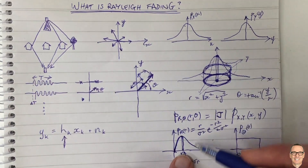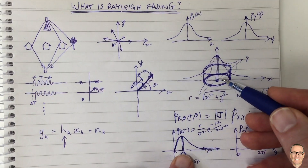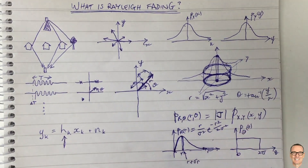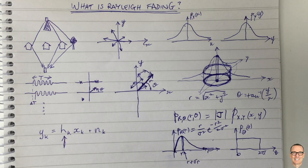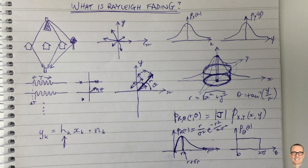So that's Rayleigh fading — it comes from multiple paths with independent Gaussian in-phase and quadrature components, leading to a uniform phase distribution and a Rayleigh-distributed amplitude. Please like the video if you found it useful, it helps others find it. Subscribe to the channel for more videos and check out the web page which has a full categorized listing of all the videos.